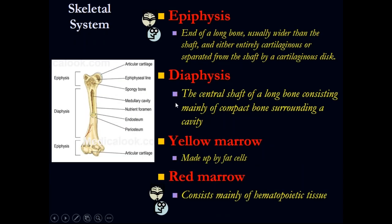Remember the components of the bone. We have the epiphysis at both distal portions, and the diaphysis — which is the shaft — in the middle. In the epiphysis we have the red bone marrow. The medullary canal or medullary cavity contains the yellow bone marrow, which is fat. The red bone marrow in the epiphysis produces the three structures: red blood cells, white cells, and platelets.